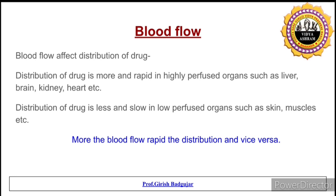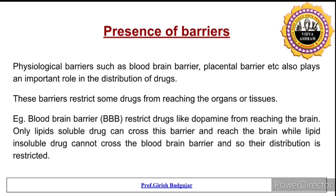The next factor is blood flow. Distribution of drug is more rapid in highly perfused organs such as liver, brain, and kidney. Distribution is less and slower in low-perfused organs such as skin and muscles. Therefore, the greater the blood flow to an organ, the more rapid the distribution of drug to that organ.